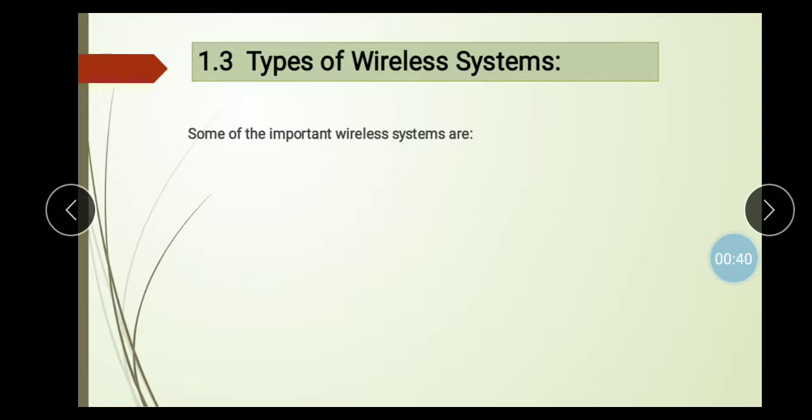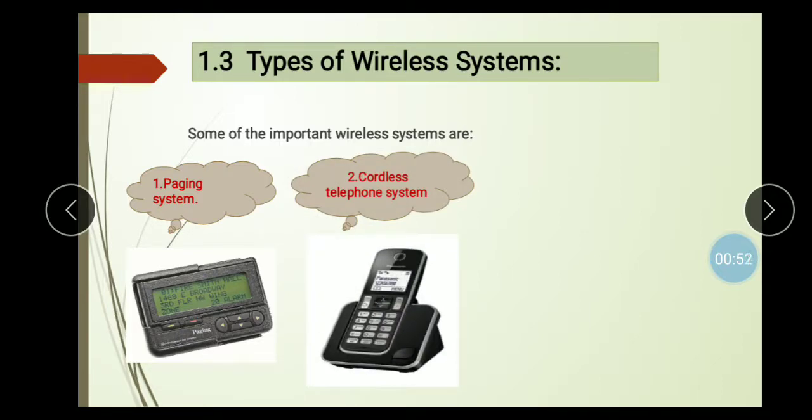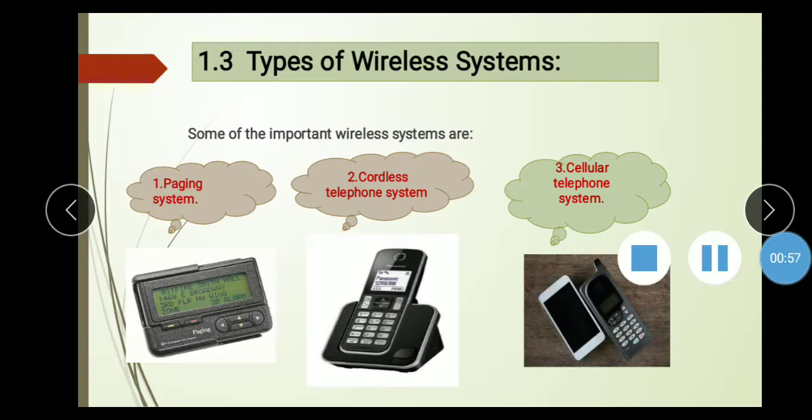Now, we discuss the types of wireless system. Some important wireless systems are: first, paging system; second, cordless telephone system; third, cellular telephone system. These three are wireless systems.